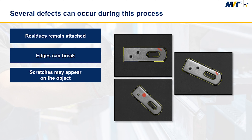These metal parts are manufactured by punching. During this process, a variety of defects can occur. For example, residues may remain attached, edges may break off, and also scratches can appear on the objects.